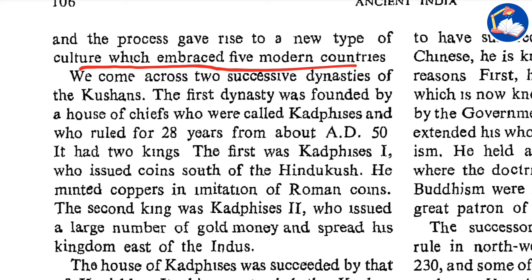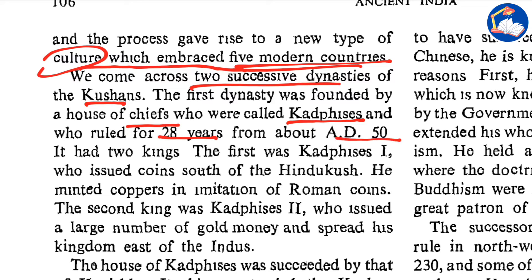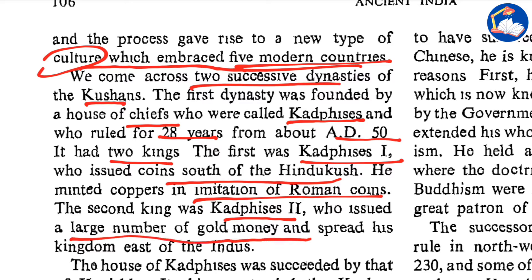If a question is asked why the Kushan kingdom is referred to as that which generated a culture embracing five modern countries, we can write the above answer. We come across two successive dynasties of Kushans. The first dynasty was founded by a house of chiefs called the Kadphises, who ruled for 28 years from about 50 AD. It had two kings: Kadphises I, who issued coins south of the Hindu Kush and minted copper coins in imitation of Roman coins; and Kadphises II, who issued a large number of gold coins and spread his kingdom east to the Indus.